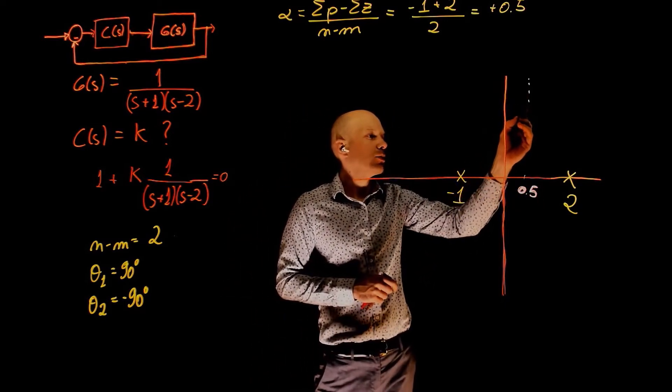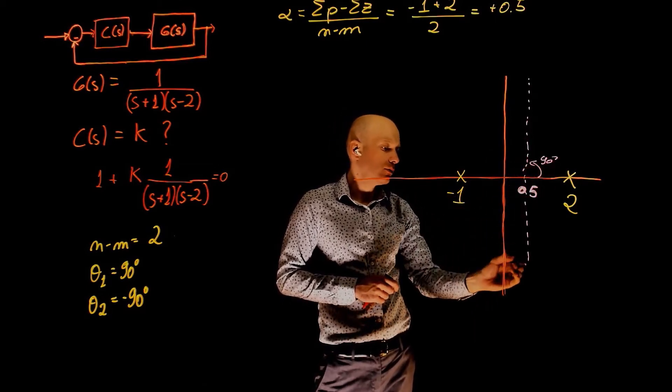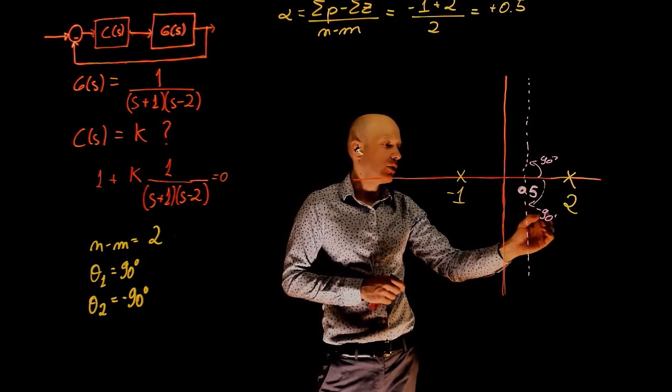One of the asymptotes will go up at a 90 degree angle. The other one goes down at a negative 90 degree angle.